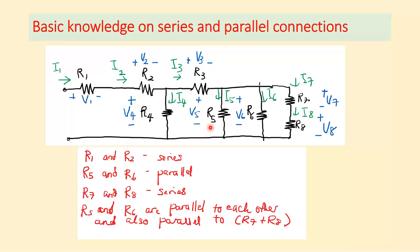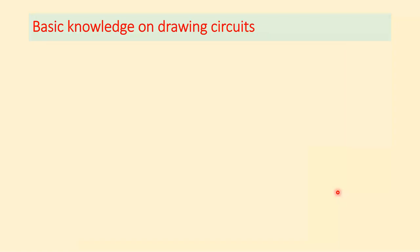R5 and R6 are in parallel with each other and also in parallel with the combination of R7 and R8. So V5 equals V6, which equals V7 plus V8. That covers the basic knowledge for series and parallel connections.